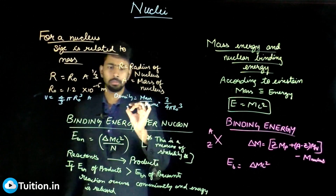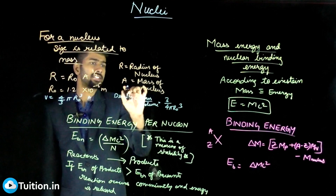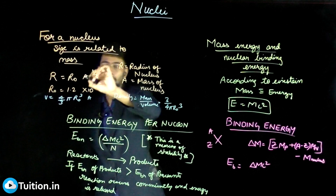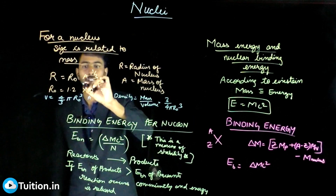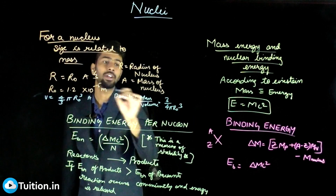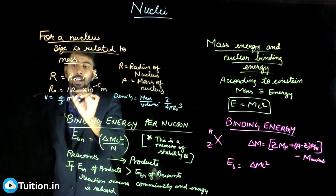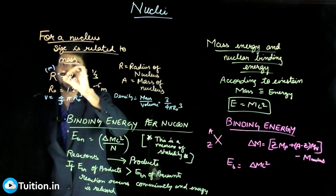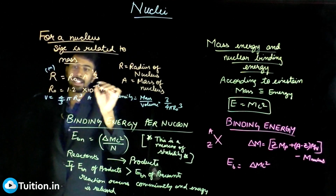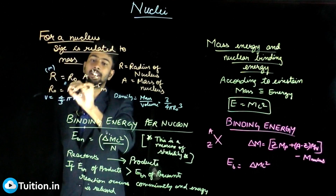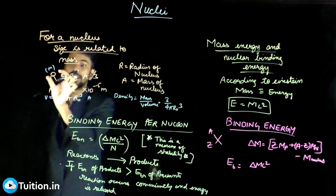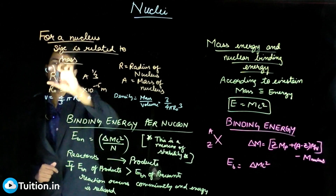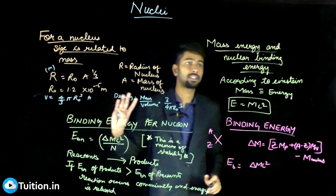One important point: A here is the mass number, and you should not put it in kilograms in the radius formula. Since r₀ has units of meters and r should also be in meters, mixing in kilograms would give inconsistent units — you'd get (meter × kg)^(1/3), which won't match. So keep that in mind and use consistent SI units throughout.